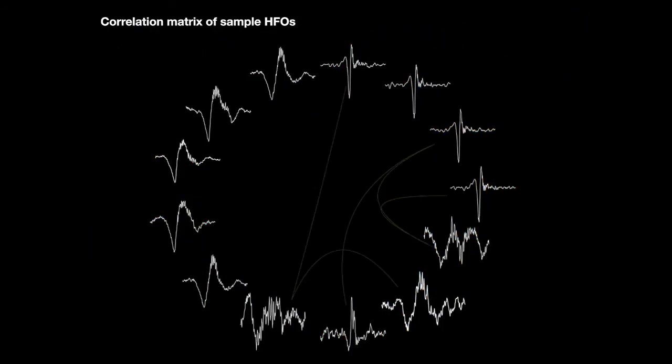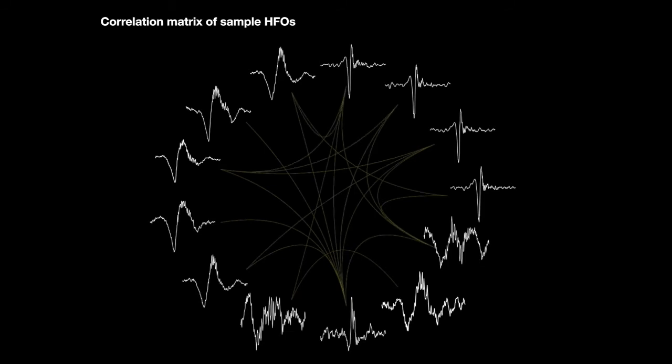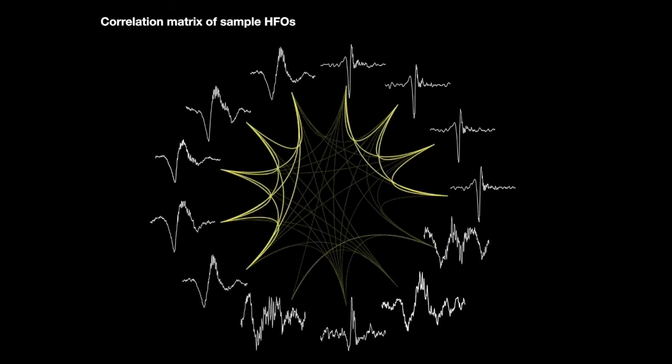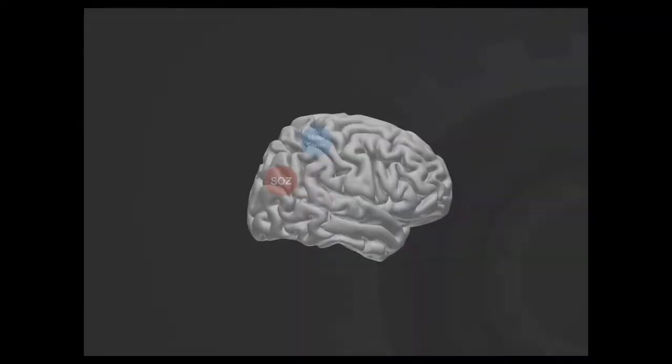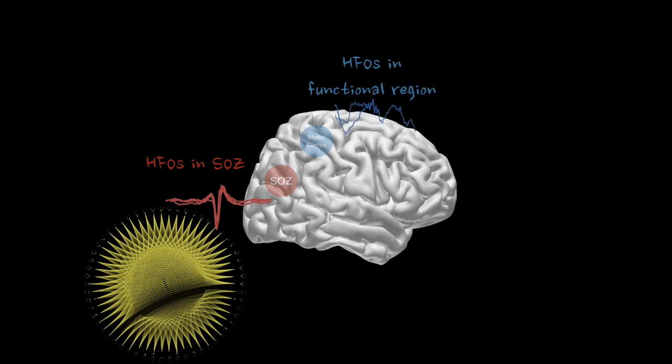When we zoom in to sample HFO waveforms by visualizing the distance matrix, HFOs in random waveform shape provide weak or invisible connections whereas highly correlated similar HFOs provide strong linkage. The compact connectivity in epileptic HFOs and the blank space in between suggest the existence of distinct patterns.